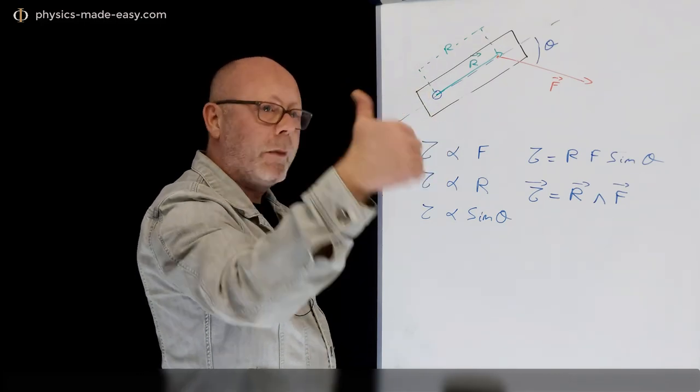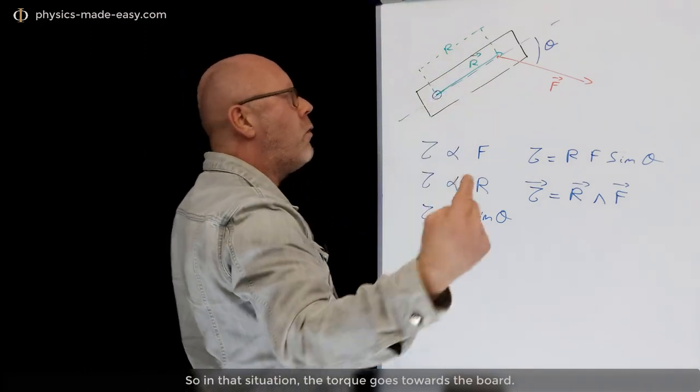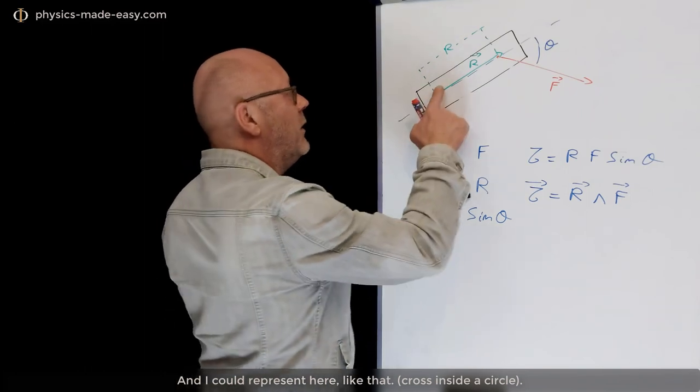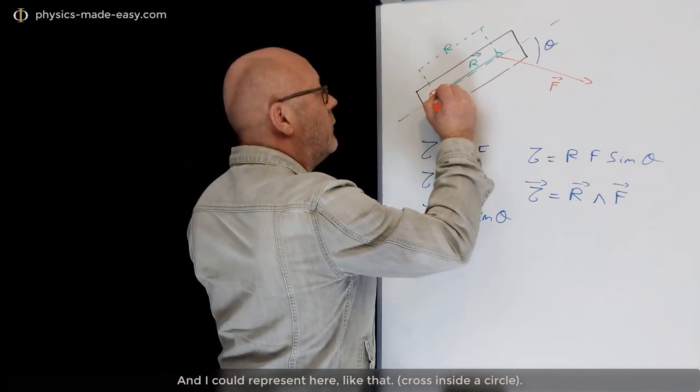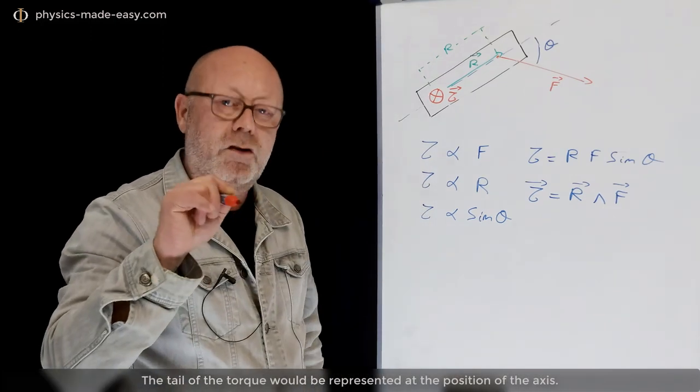So you use your hand and you rotate your hand clockwise, the fingers like this. The thumb will be your torque. So in that situation, the torque goes towards the board. And I could represent it here, like that. The torque will be located at the position of the axis.